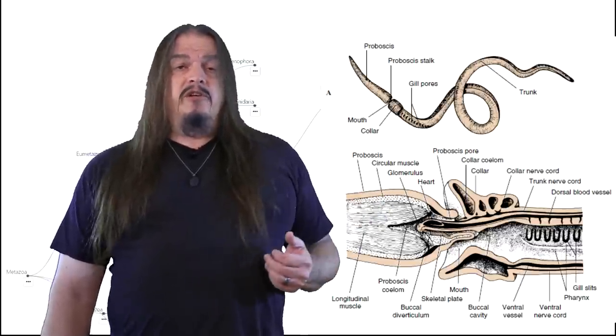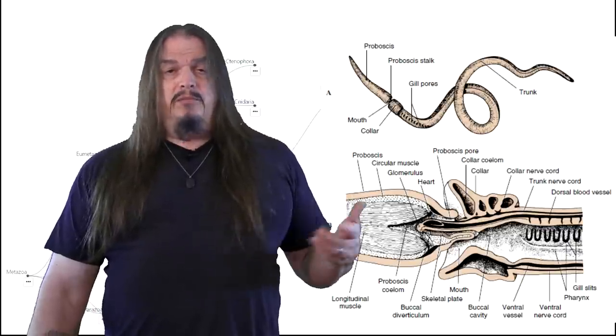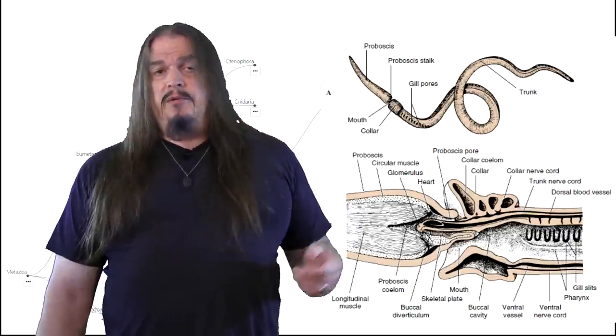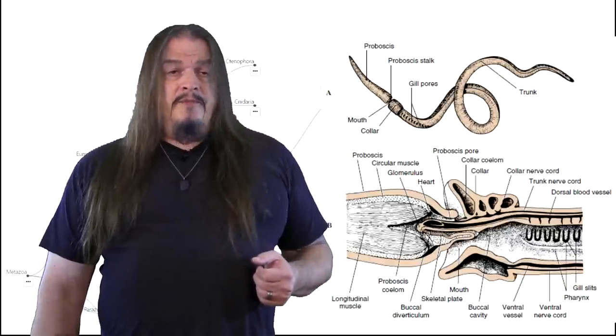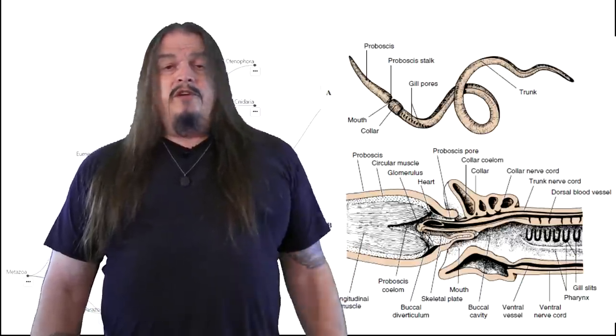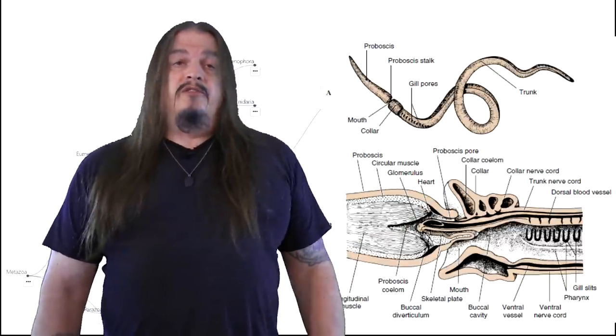First we see this wide space in the circulatory system which contracts, pumping blood cells into circulation in a way that more primitive animals don't do at all. This is obviously a very simple heart. It doesn't have the chambers or other features of more modern hearts but that's obviously what it is.